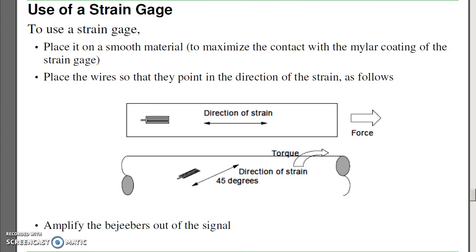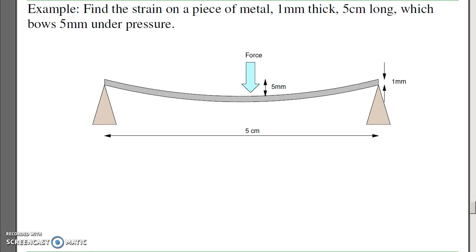To use the strain gauge, I need to place it on a smooth material to maximize the contact with the mylar coating, and place the wires so that they're in the direction of the strain that I want to measure. Then, once I do that, I need to amplify the bejeebers out of it. For example, if I have a beam and a push on it and it deflects, that's going to cause strain. This is how a bathroom scale is built. I've got a beam that's placed between two endpoints. As I stand on the scale, this beam is going to flex. If I can measure the strain on it, I can measure the force.